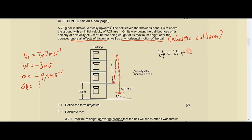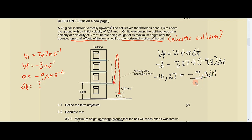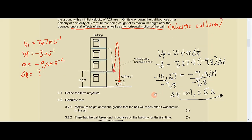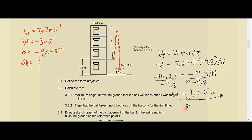Substituting: vf = −3, vi = 7.27, a = −9.8. So −3 = 7.27 + (−9.8)Δt, giving −10.27 = −9.8Δt. Dividing both sides by −9.8, delta t equals 1.05 seconds (rounded to two decimal places). The time from being thrown until reaching the balcony is 1.05 seconds — all that for a total of three marks.